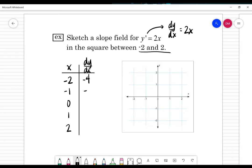If I multiply negative 1, I'm going to get a slope of negative 2. Multiply by 0, I get 0, and so on. We are given a differential equation that's telling me what my slope looks like at each of those x values.